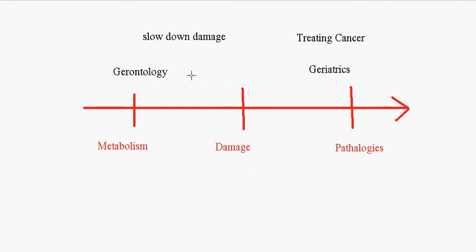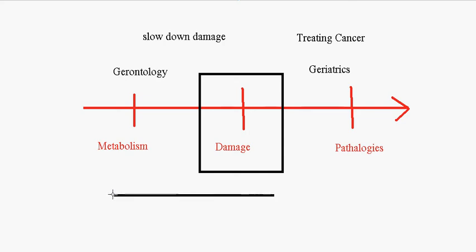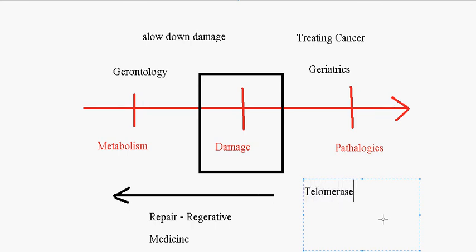This is Aubrey de Grey's approach: you start from the area of damage and now you want to reverse it, or rather not only prevent the damage from getting worse but have repair mechanisms working in the body. This is repair or regenerative medicine. I think right now, since we have limited knowledge of how the body works, it's better than gerontology and geriatrics. We don't need to know that much to repair something. We have telomerase to slow down the shortening of the telomeres.